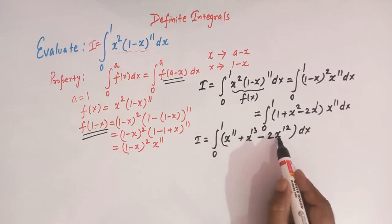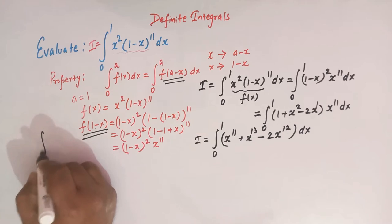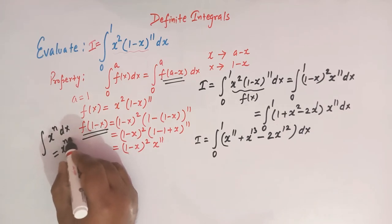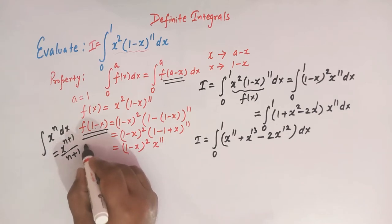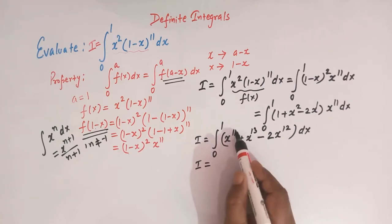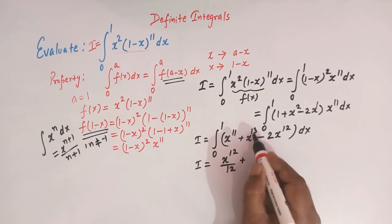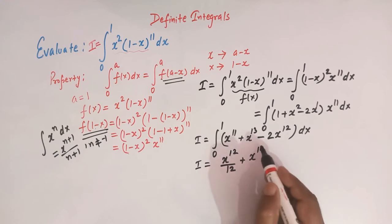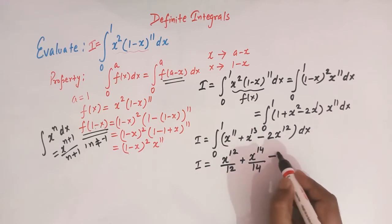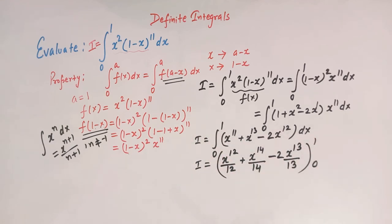We now have three terms and we integrate each using the power rule: the integral of x raised to n equals x raised to (n+1) over (n+1), where n is not equal to minus 1. So integrating, we get x raised to 12 over 12 plus x raised to 14 over 14 minus 2 times x raised to 13 over 13, evaluated from 0 to 1.